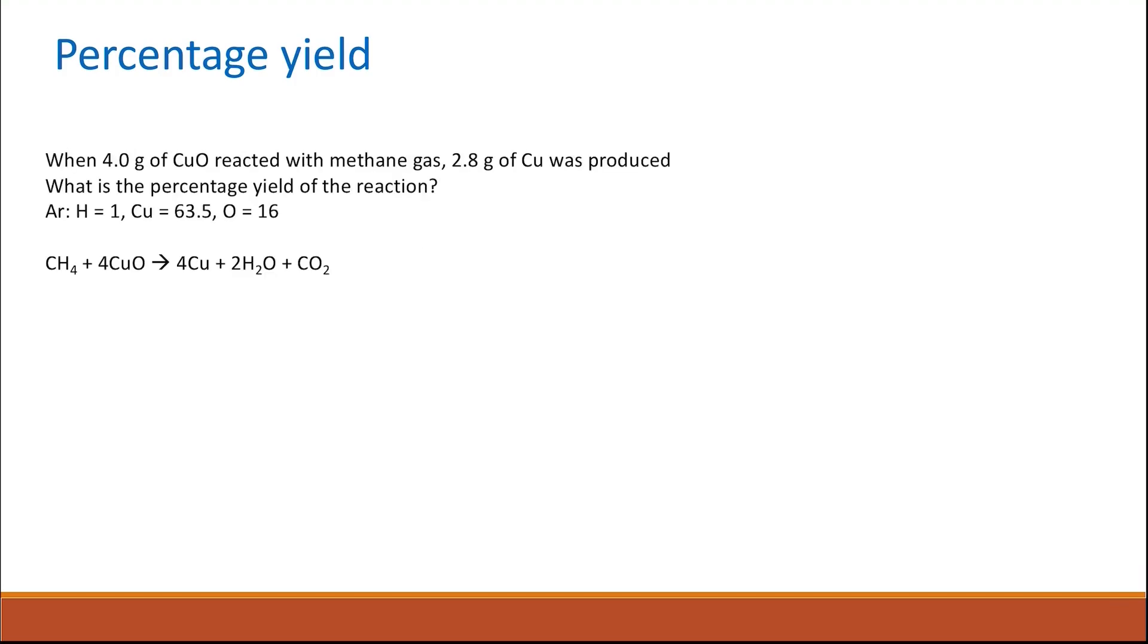So let's have an example to see how to calculate the percentage yield. The question says that when 4 grams of copper oxide reacted with methane gas, 2.8 grams of copper was produced. What is the percentage yield of the reaction? And here it gives you the atomic weight of hydrogen, copper, and oxygen.